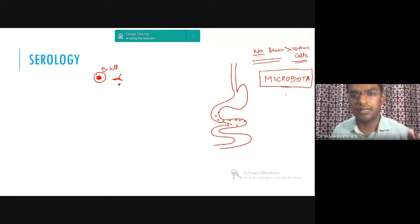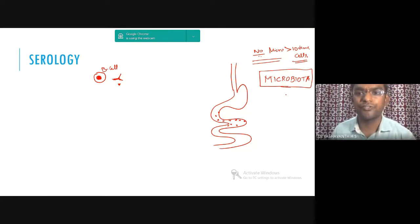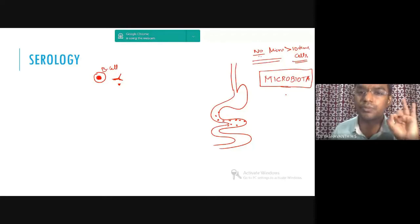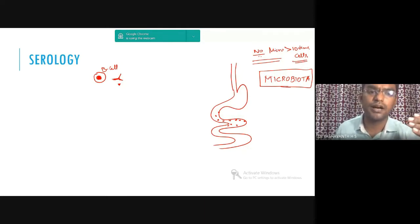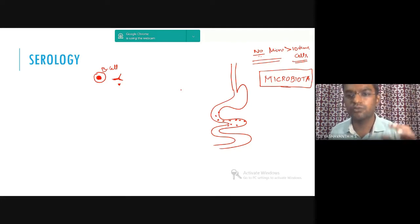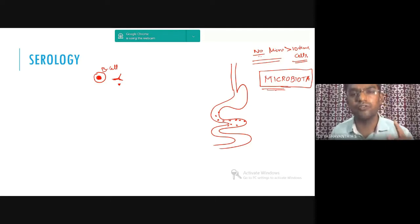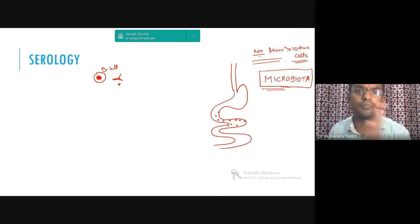Initially we thought microbiota only affects GI diseases. Now there is research saying microbiota causes Alzheimer's and makes individuals prone to cardiac diseases. If you ask where the highest money goes in medical research nowadays, it is two areas: one is microbiota, and the second is immunotherapy. These are known to be game changers. Immunotherapy uses inflammation pathways — the same pathways involved in cancers — and there are already a few immunotherapy drugs in the market with fantastic results.